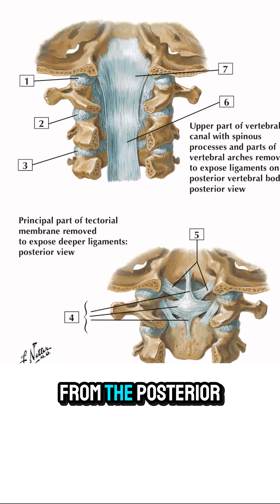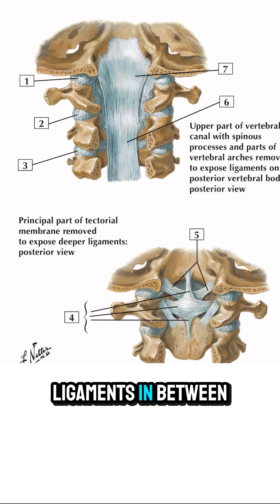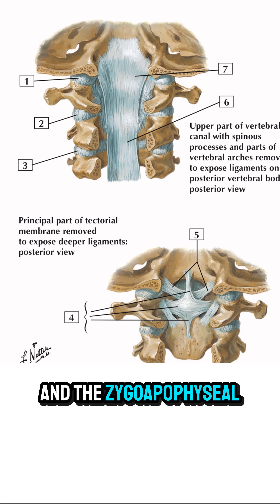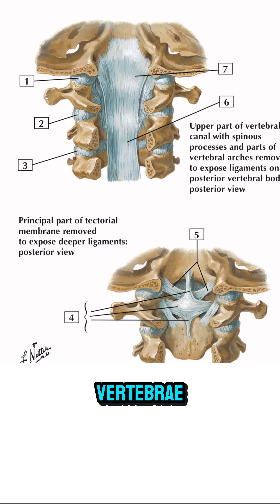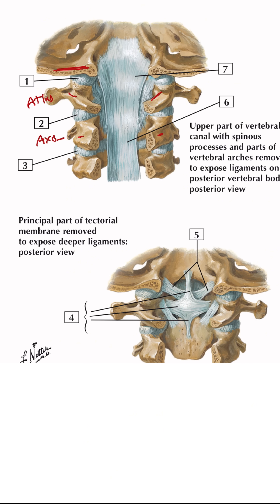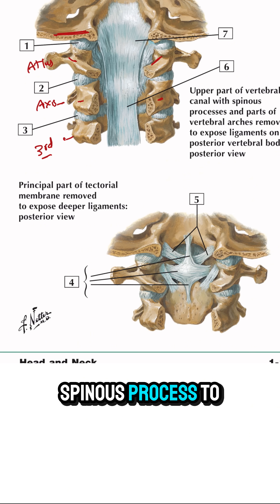On this diagram you are looking from the posterior surface of the cervical spine, with the spinous processes removed to be able to identify the ligaments in between the atlanto-occipital and the atlanto-axial joint, and the zygapophysial joints as well between the cervical vertebrae. Just for a bit of orientation, this is the occipital bone or the base of the skull, this is the atlas, this is the axis, and this is going to be the third cervical vertebra.